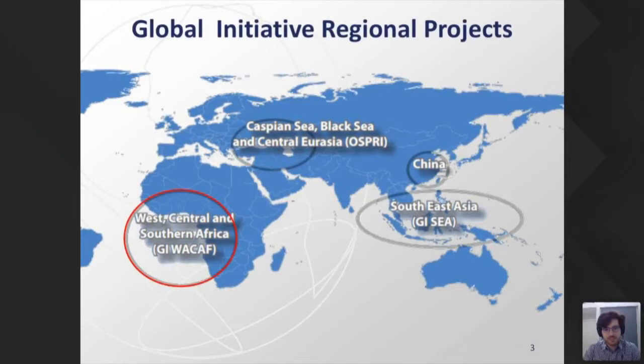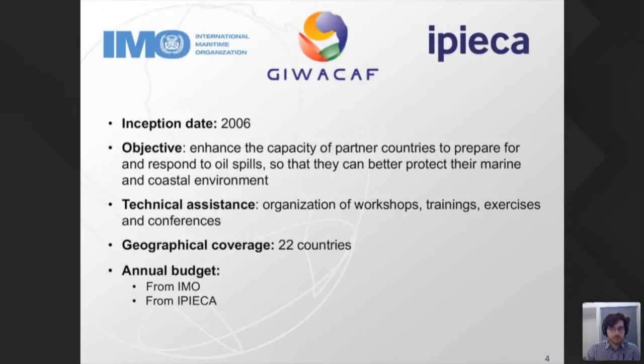The Global Initiative has several regional projects. GI-WACAF is one of them, alongside sister projects in the Caspian and Black Seas (OSPRI) and Southeast Asia (GIC). WACAF stands for West, Central and Southern Africa — covering all 22 countries of the Atlantic coast of Africa, as shown on the map.